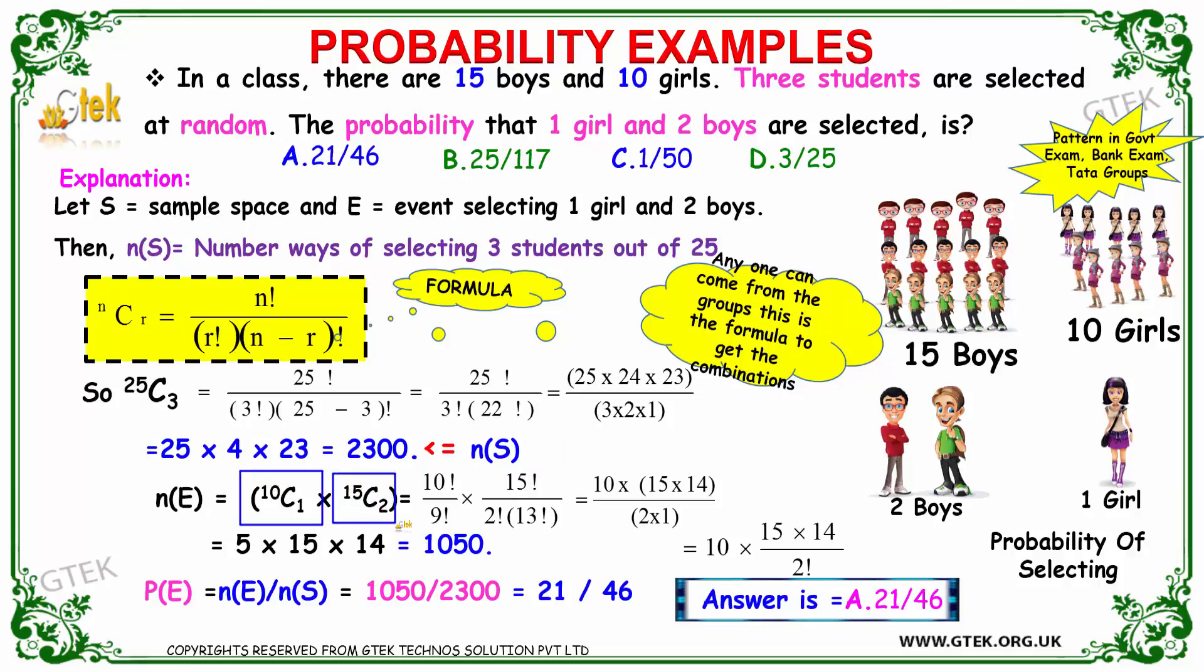10C1 into 15C2, that's 10 factorial divided by 9 factorial, into 15 factorial into 2 into 13 factorial. Solving this one, you got 5 into 15 into 14, we got 1050. The probability is the number of events divided by number of sample space: 1050 divided by 2300, you got 21 divided by 46. That's the answer.